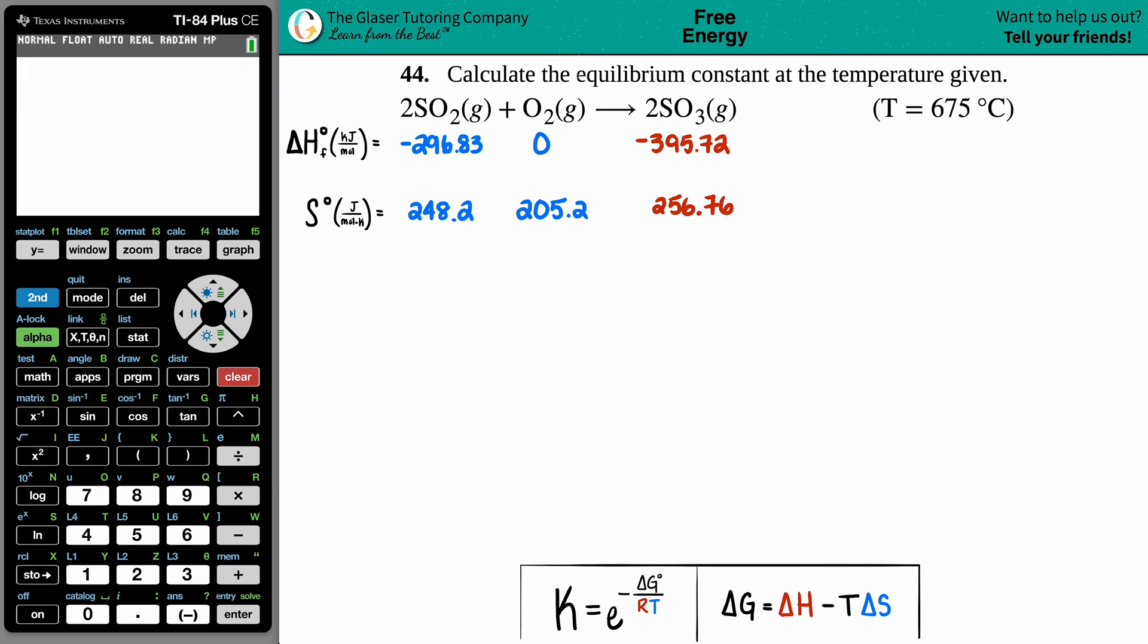Number 44: Calculate the equilibrium constant at the temperature given. The balanced equation is 2SO₂(g) + O₂(g) ⟶ 2SO₃(g), and the temperature is 675 degrees Celsius. That's hot.